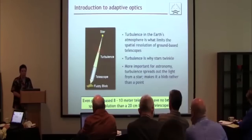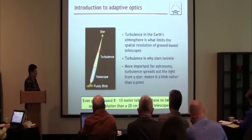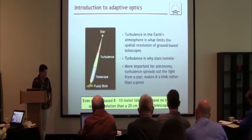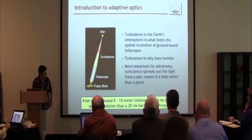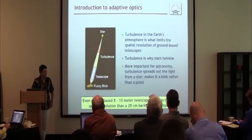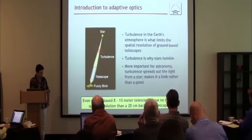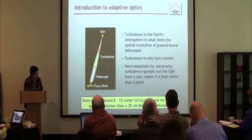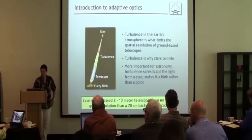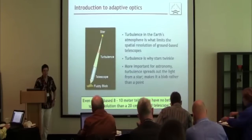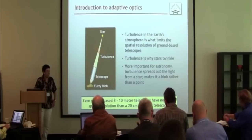This is actually quite extreme — it's not just that it makes things a little worse. Even a ground-based 8 to 10 meter telescope, which is the biggest we have today, has no better spatial resolution than a little backyard telescope. Physics theory says that in the absence of turbulence, the resolution should increase proportional to the diameter of a telescope. The fact that an 8-inch and an 8-meter telescope have the same spatial resolution tells you right away that something's drastically wrong, and that's what we're trying to fix.